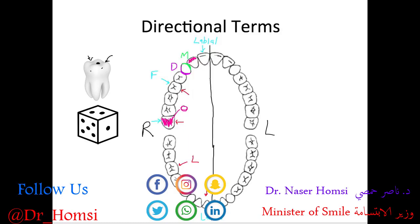The facial surfaces of posterior teeth also have a special name: they are called the buccal surface — B for short. That's because posterior teeth contact the inside of the cheek, which is associated with the buccinator muscle, or 'buccal' surface. This distinguishes the facial surfaces of posterior teeth from those of anterior teeth.